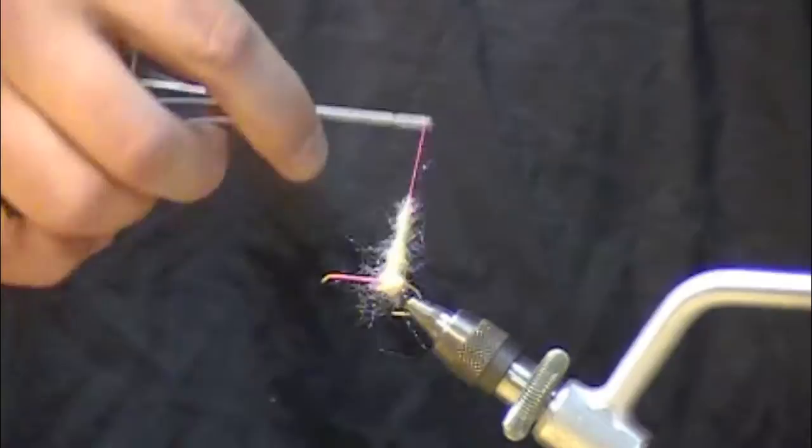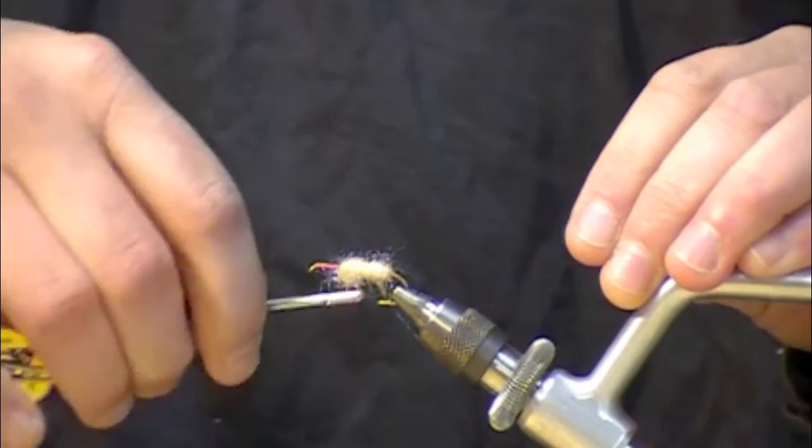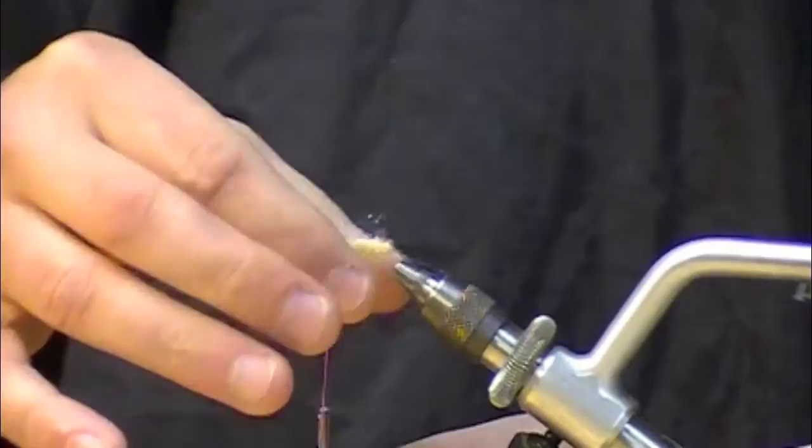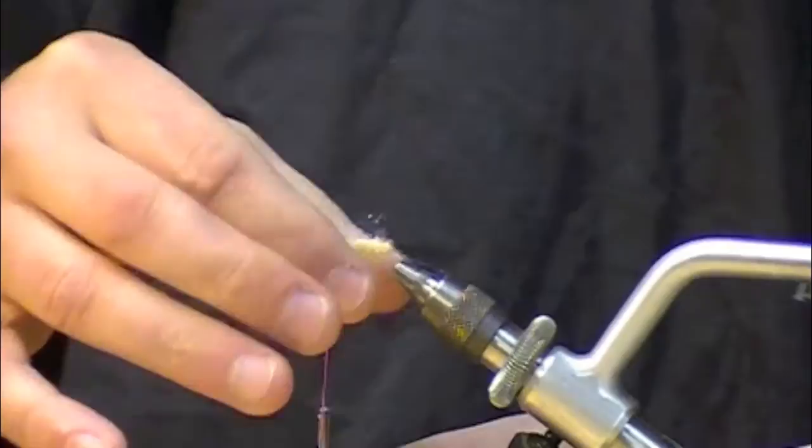Just kind of wrap that forward and you can see the difference between say spinning your dubbing onto the thread and just wrapping forward as opposed to a dubbing loop is that we can get a much buggier profile with the dubbing loop style dubbing brush.